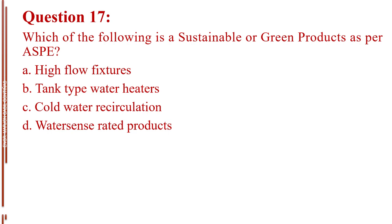Question number 17. Which of the following is a sustainable or green product as per ASPE? Letter A, high-flow fixtures. Letter B, tank-type water heaters. Letter C, cold water recirculation. Letter D, water-sense rated products. The answer is Letter D, water-sense rated products.